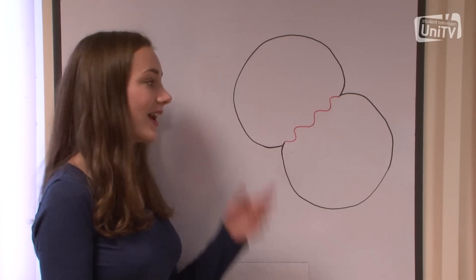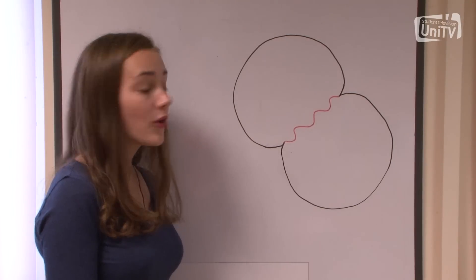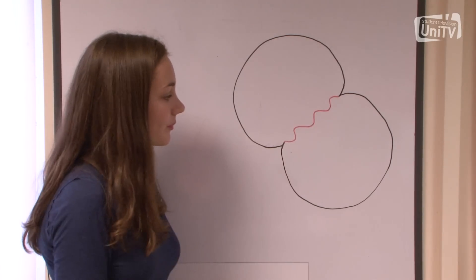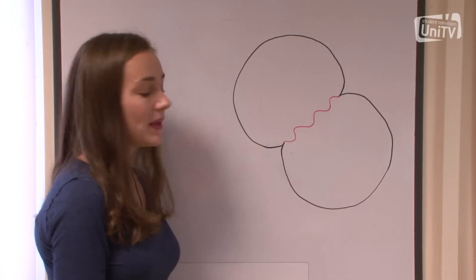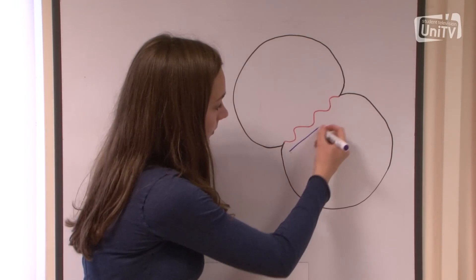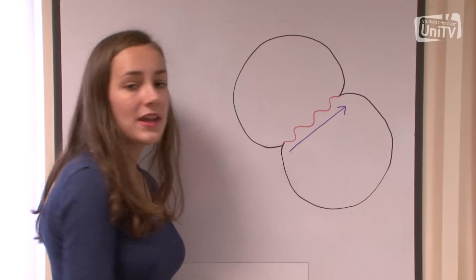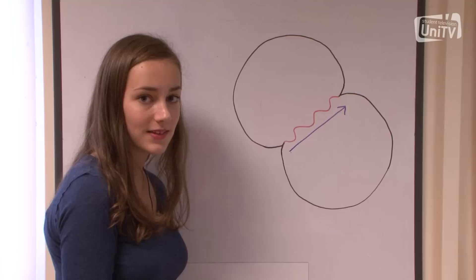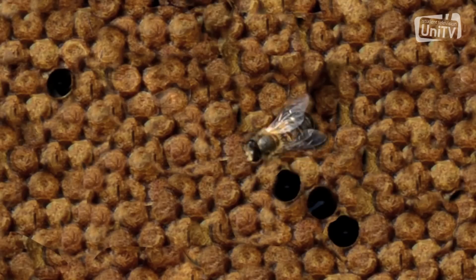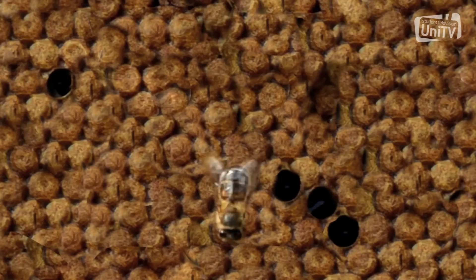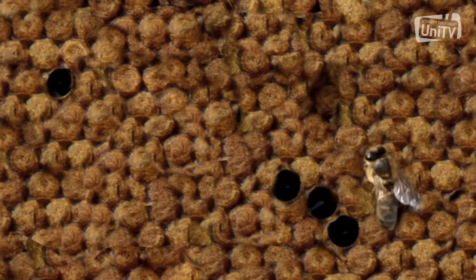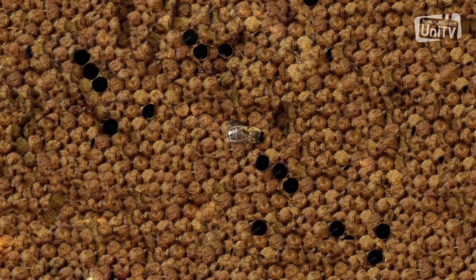The waggle dance is like a figure of eight. It involves a run with a waggle and two circles. The run shows the other bees the direction of the nectar, and the speed at which the dance is performed shows how far away the nectar is. The dancing bee kind of vibrates its body, moving its body over the comb, and it moves forward a very small distance — that is called the waggle run. And that really is the guts of the waggle dance.